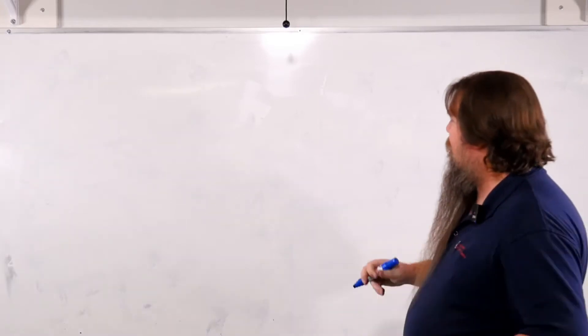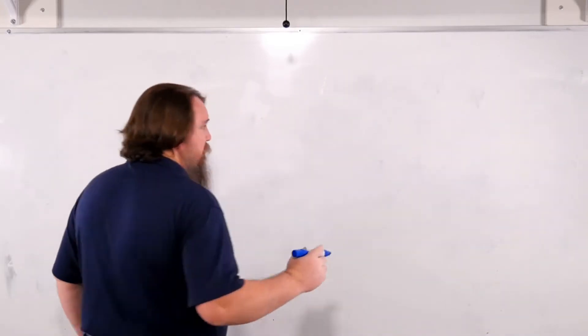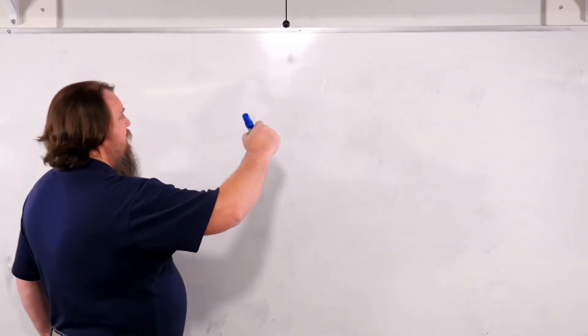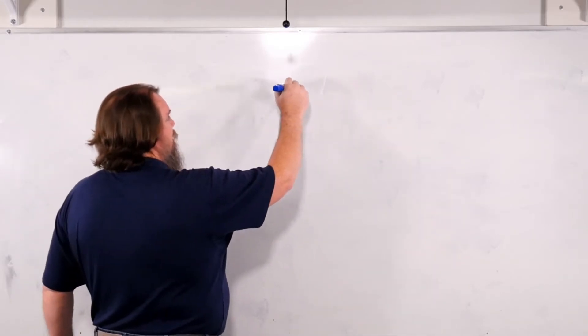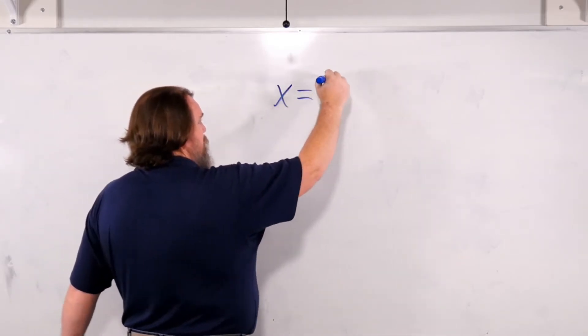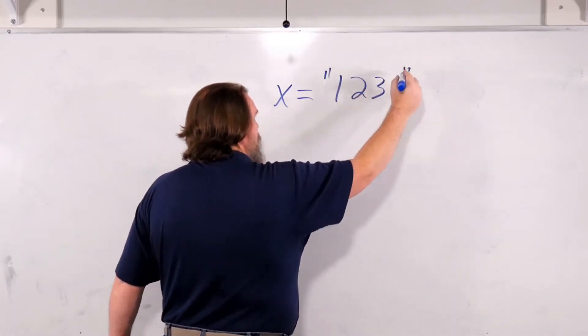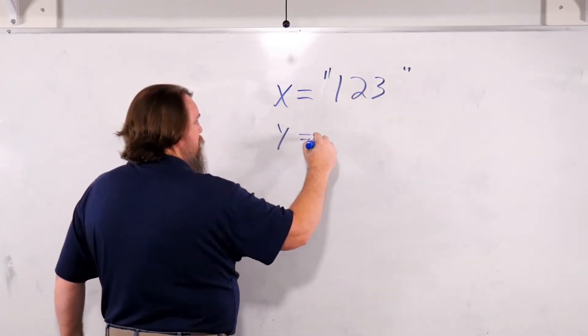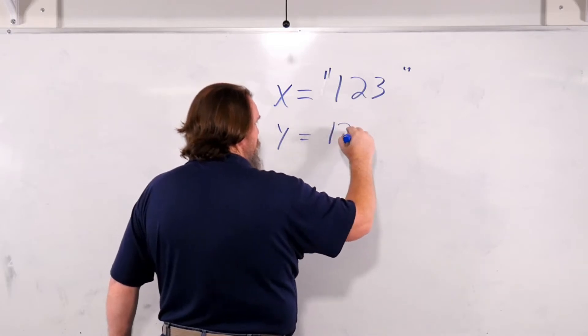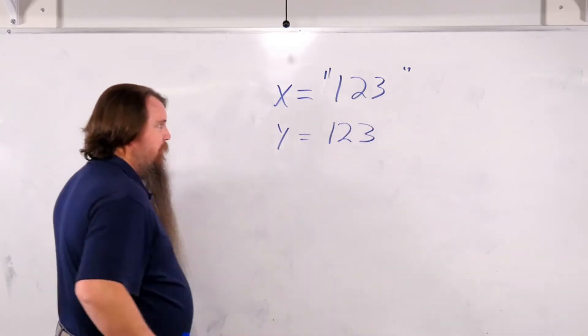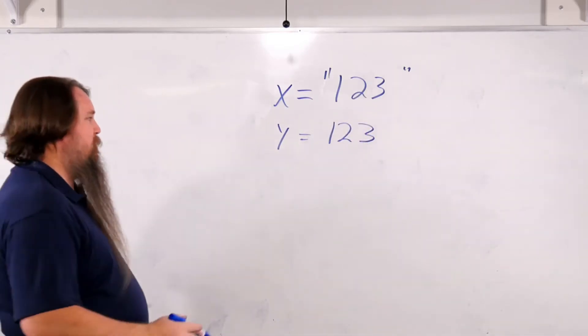So something that's very important to understand about variables is how they actually store the data. So if we say x equals the string 1, 2, 3, and we say y equals the integer 1, 2, 3, well what's the difference between them?